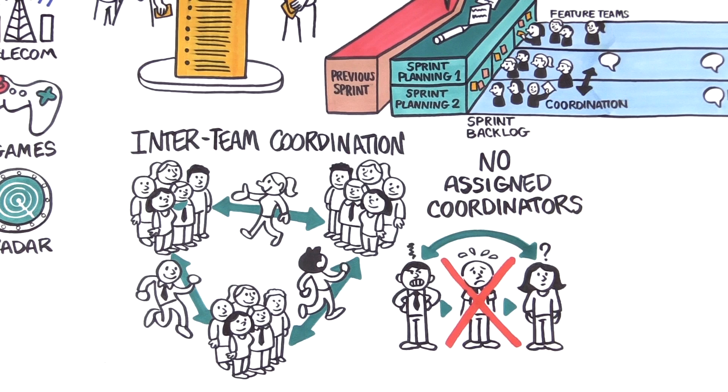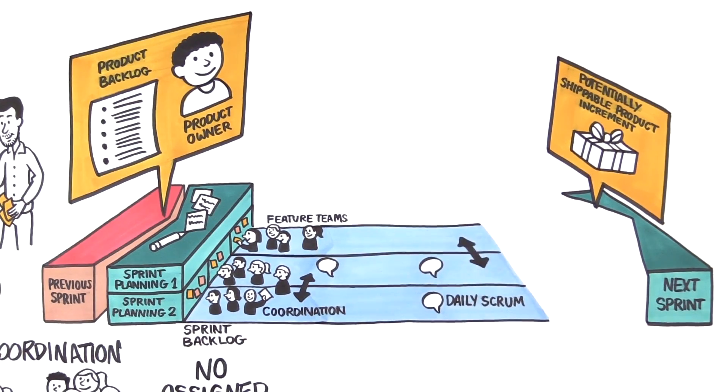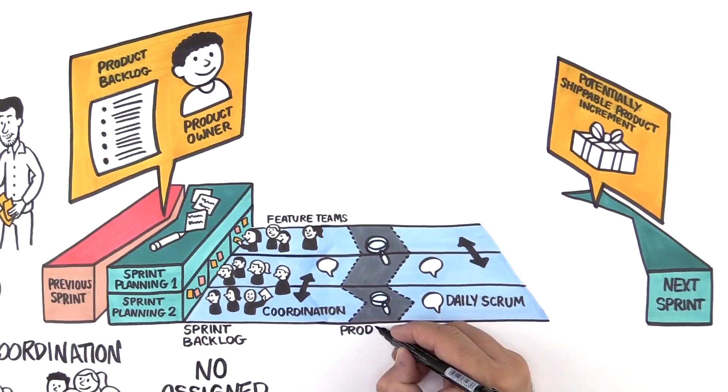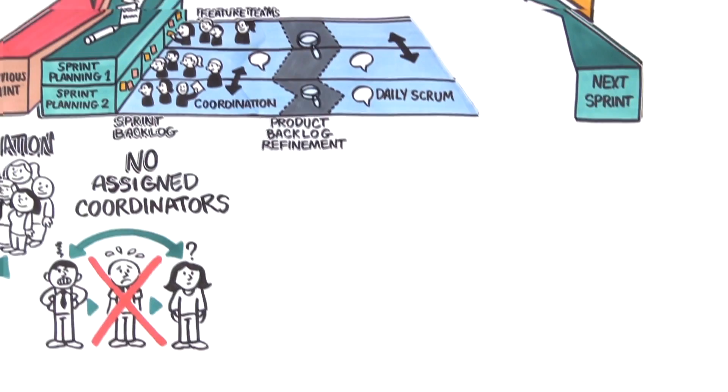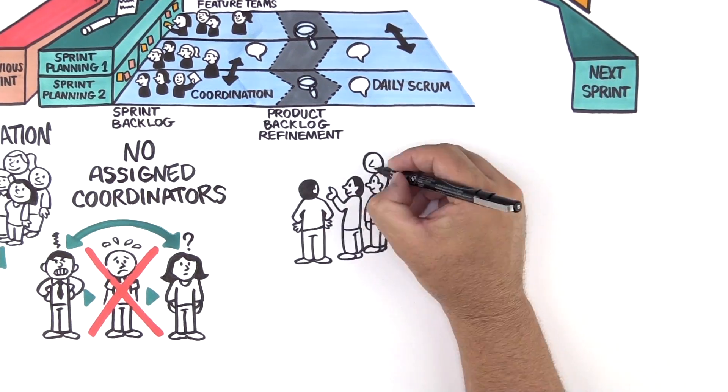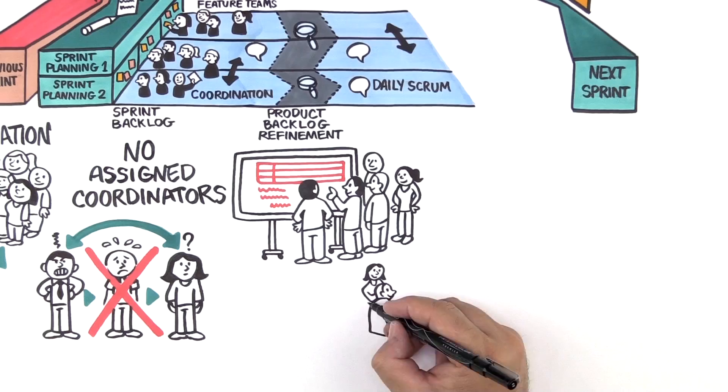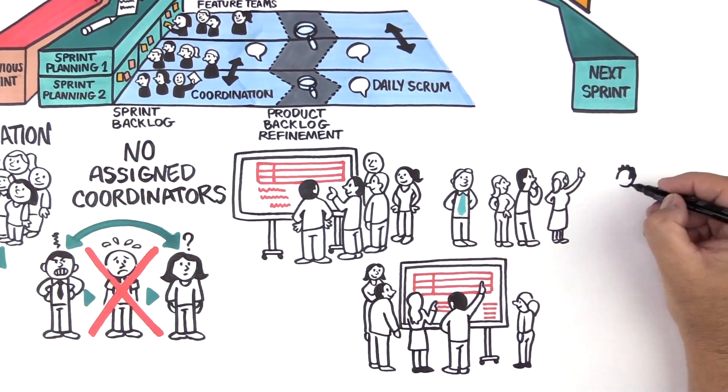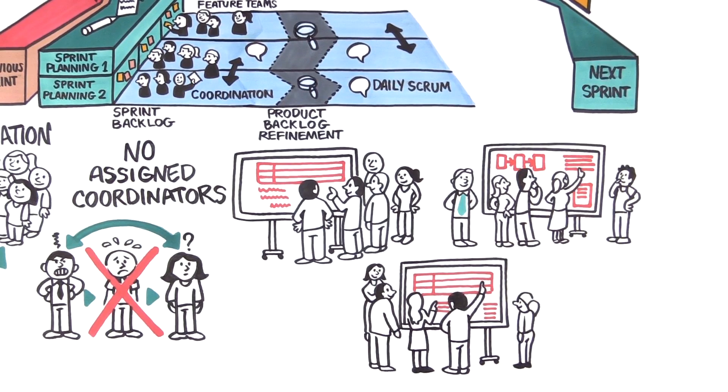Halfway through the sprint, teams briefly pause the current sprint work for Product Backlog refinement—collaboration with customers and end users to clarify work for future sprints. By connecting teams to customers, we free up the Product Owner for vision and prioritization.